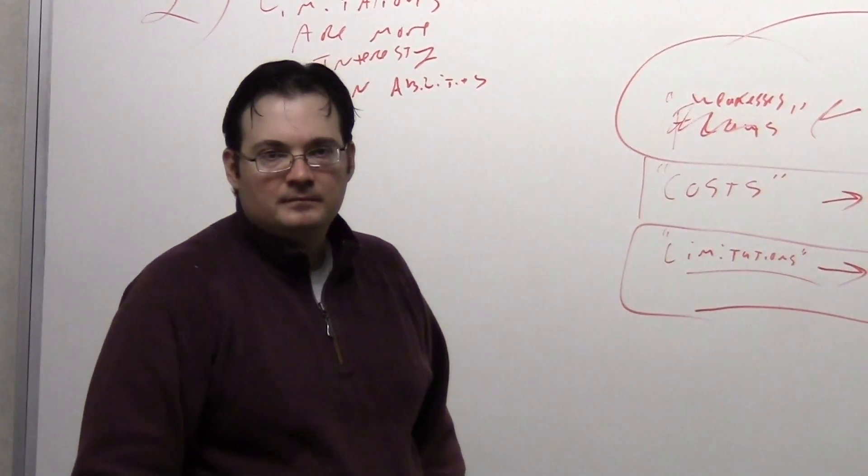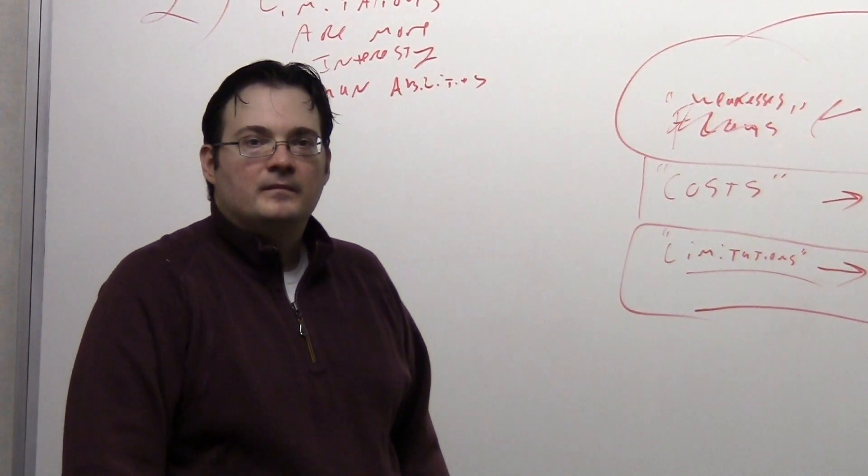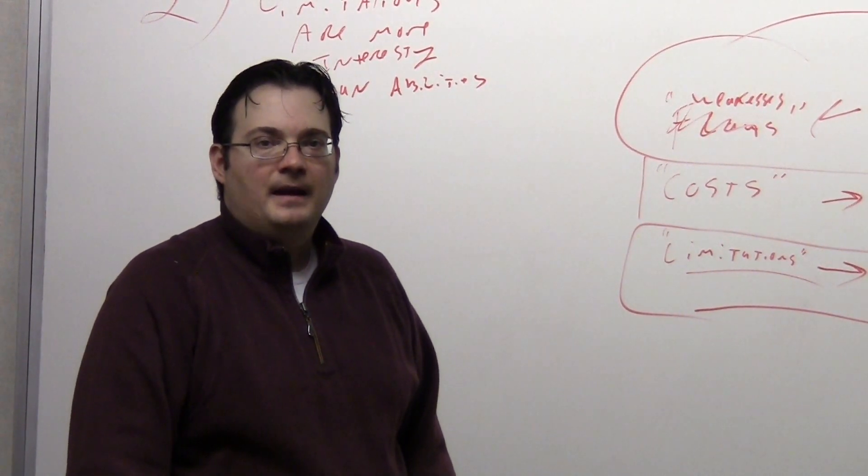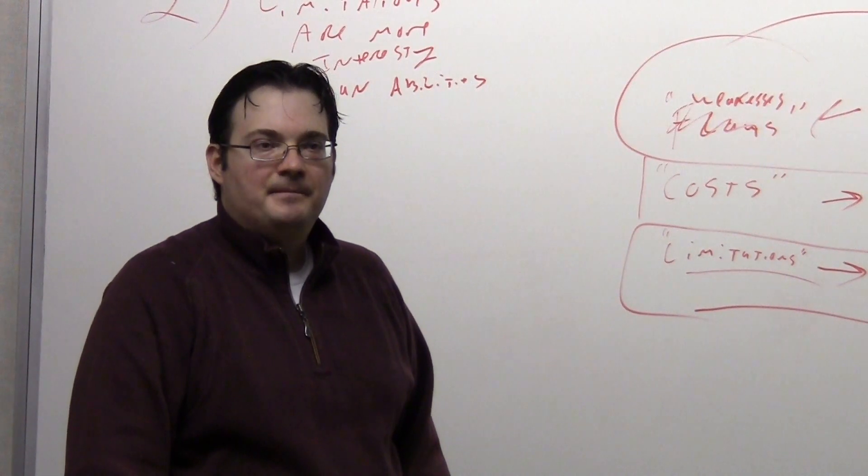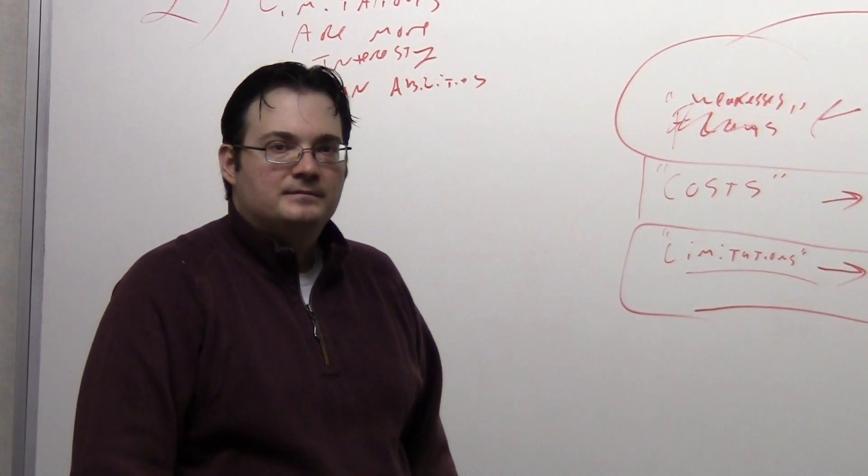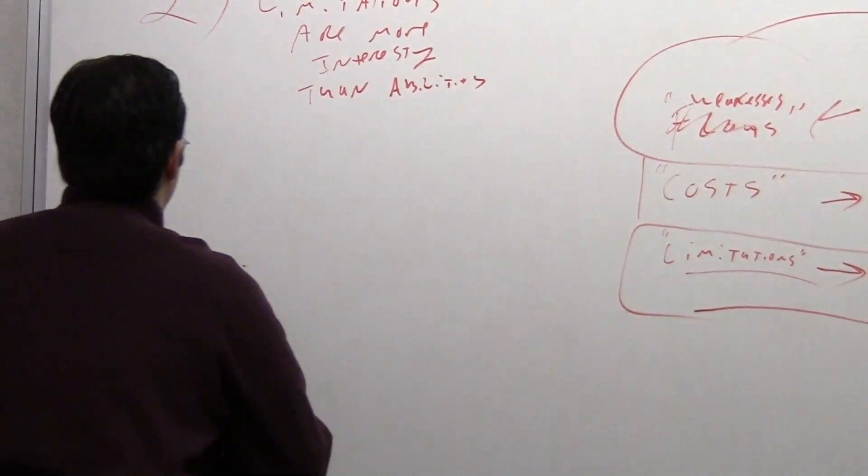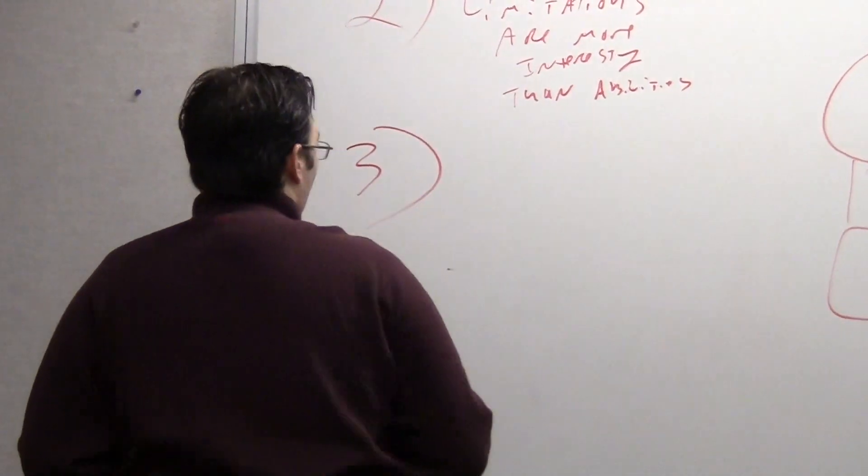So in your magic systems, how do you make it not seem arbitrary when you're trying to put these details in, trying to make it seem real? Yeah, that's Sanderson's Third Law, which we don't have time for at all.